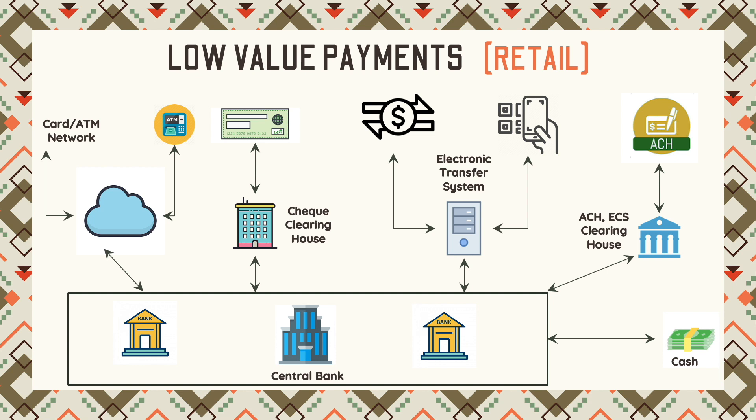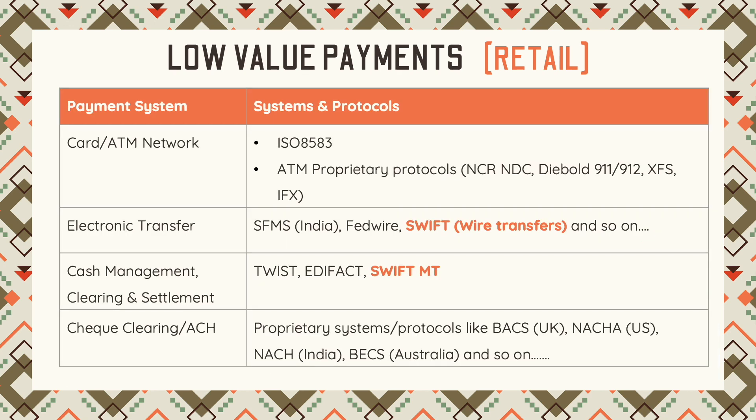This table provides a small glimpse of the various protocols used in low value payments. In the card and ATM world, ISO 8583 is one of the predominant protocols, along with many ATM-specific proprietary protocols. For electronic transfer, there are protocols like SFMS in India, and across the world, Swift MT is majorly used for cash and clearing management. Swift MT is also used for check clearing, along with systems like TWIST. Every country has its own system and specific protocols, typically file-based exchange.